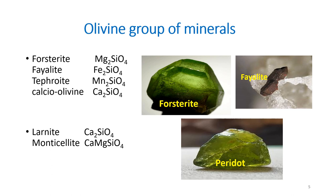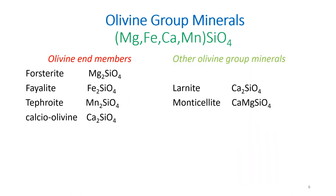Forsterite is also known as magnesium olivine with the formula Mg₂SiO₄, where SiO₄ is the nesosilicate silicon-oxygen tetrahedra. Forsterite is magnesium silicate, fayalite is iron silicate, tephroite is manganese silicate, and calcium olivine is Ca₂SiO₄. Monticellite consists of calcium-magnesium silicate and is known as calcium-magnesium olivine. These mineral names and compositions are important to remember.